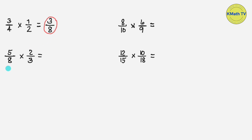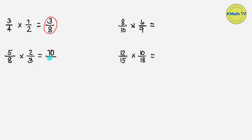Next example, let's multiply 5 eighths times 2 thirds. Multiply the numerators: 5 times 2 equals 10. And multiply also the denominators: 8 times 3 equals 24. The answer is 10 over 24.